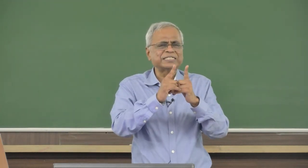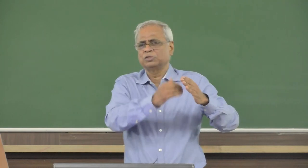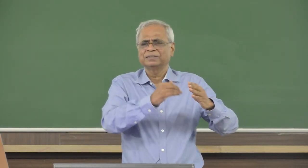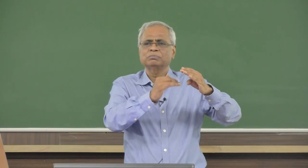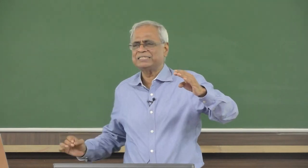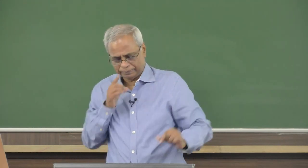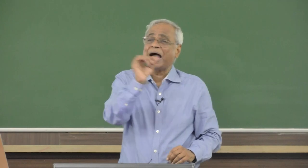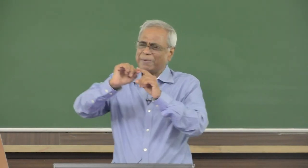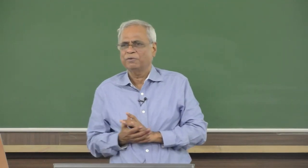You can take every second or every half second. From 0 to 108 seconds, if you do it at 1 second each, you take 108 intervals of delta t = 1 second. You calculate the average velocity during that interval. If you take 0.5 seconds, the number of rows in the spreadsheet will go up, but typically 1 second with average velocity gives very good results.